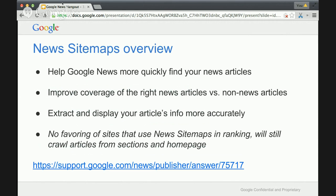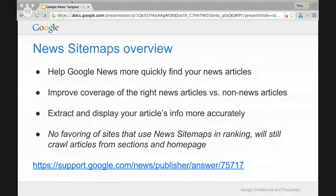To create a Google News sitemap, use the same formatting as a regular sitemap — it just has a little difference in the tags. Google News sitemaps are not only helpful if you wanted to bypass the three-digit rule, but they're really great for the bot to more quickly find your news articles.